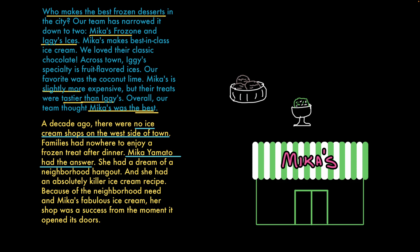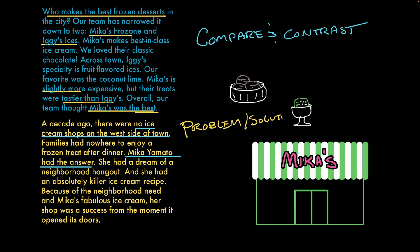Step three: compare and contrast. Why would the authors of these texts choose these structures? Text one uses a compare and contrast structure because the author wanted to convince you that Mika's has the best frozen treats in town. But text two uses a problem and solution structure because the author wanted to show how Mika solved a problem in her neighborhood by opening her ice cream shop. Remember, different text structures have different purposes or goals. The way a text is ordered or arranged can shape how you think about the information in that text and what information seems the most important.